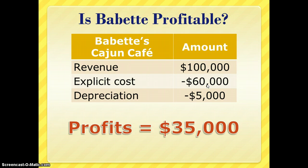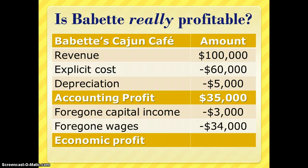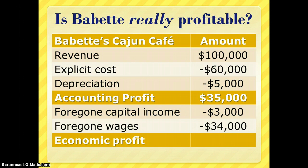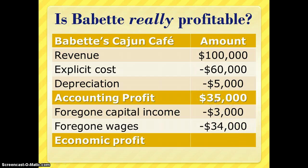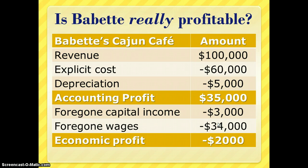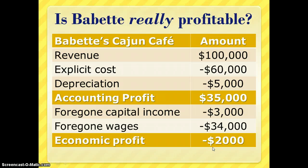Taking into account the same explicit costs and depreciation, Babette could sell her machinery and put the money in an interest-bearing account earning $3,000 from her capital. She could also sell her business and work for someone else, earning $34,000 in wages. That's $37,000 in implicit costs. So while she has a $35,000 accounting profit, incorporating those implicit costs gives Babette a negative economic profit. From an economic perspective, she'd be better off selling her business and working for someone else.